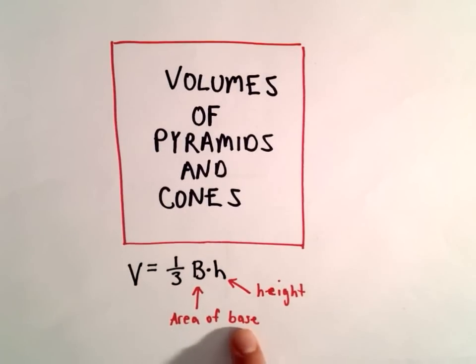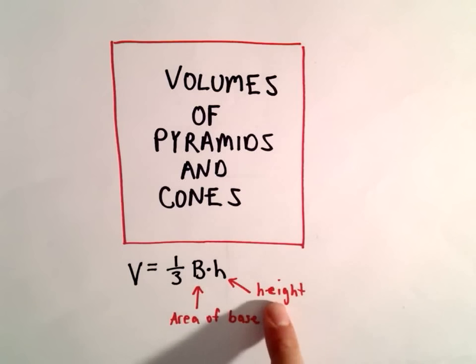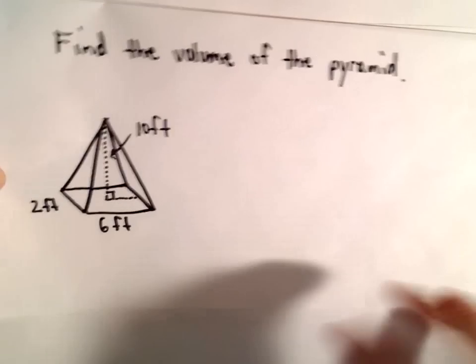So we have to find the area of the base and simply multiply that by the height and by one-third. And then that will give us the volume.